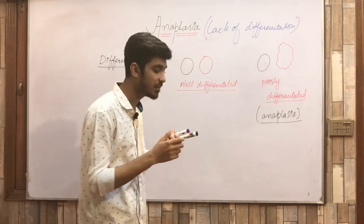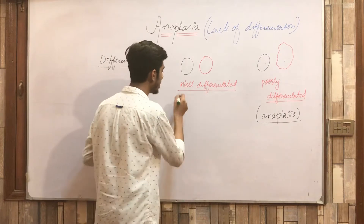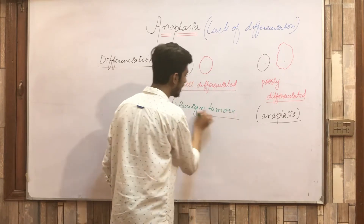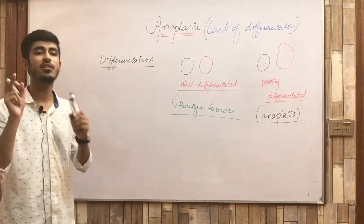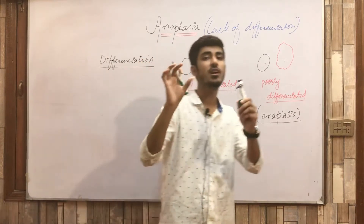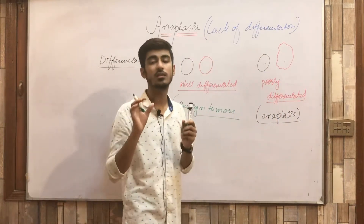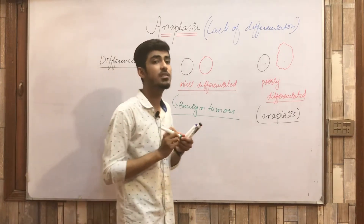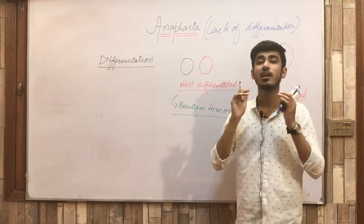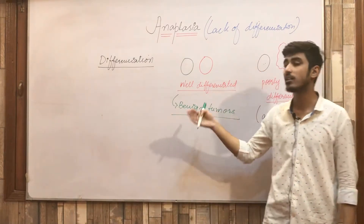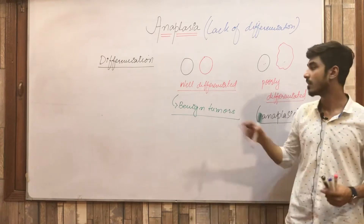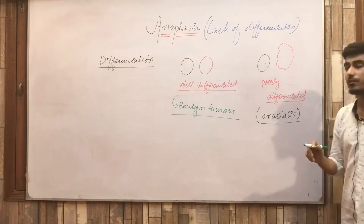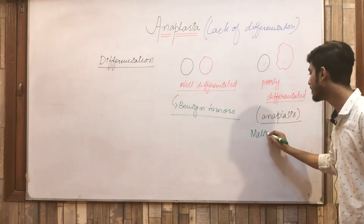Now, which type of tumors have the characteristic of well differentiation? Those tumors are the benign tumors. Benign tumors are well differentiated, meaning they are very similar to normal cells — sometimes so similar that it is difficult to distinguish whether it is a tumor cell or a normal cell. Poorly differentiated tumors are the malignant tumors.